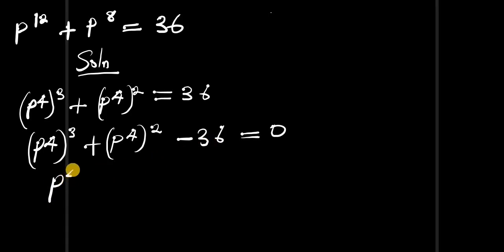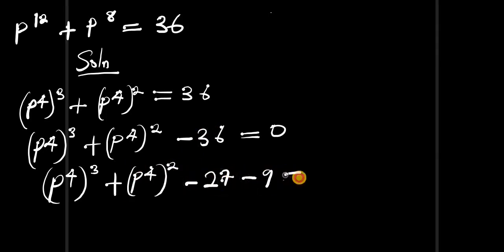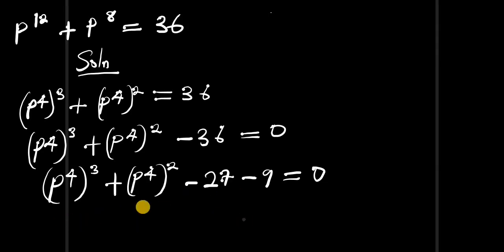We split 36 as: (p⁴)³ plus (p⁴)² minus 27 minus 9 equals zero, because 3 to the power of 3 is 27 and 3 to the power of 2 is 9. That's why we are splitting 36 into this form.